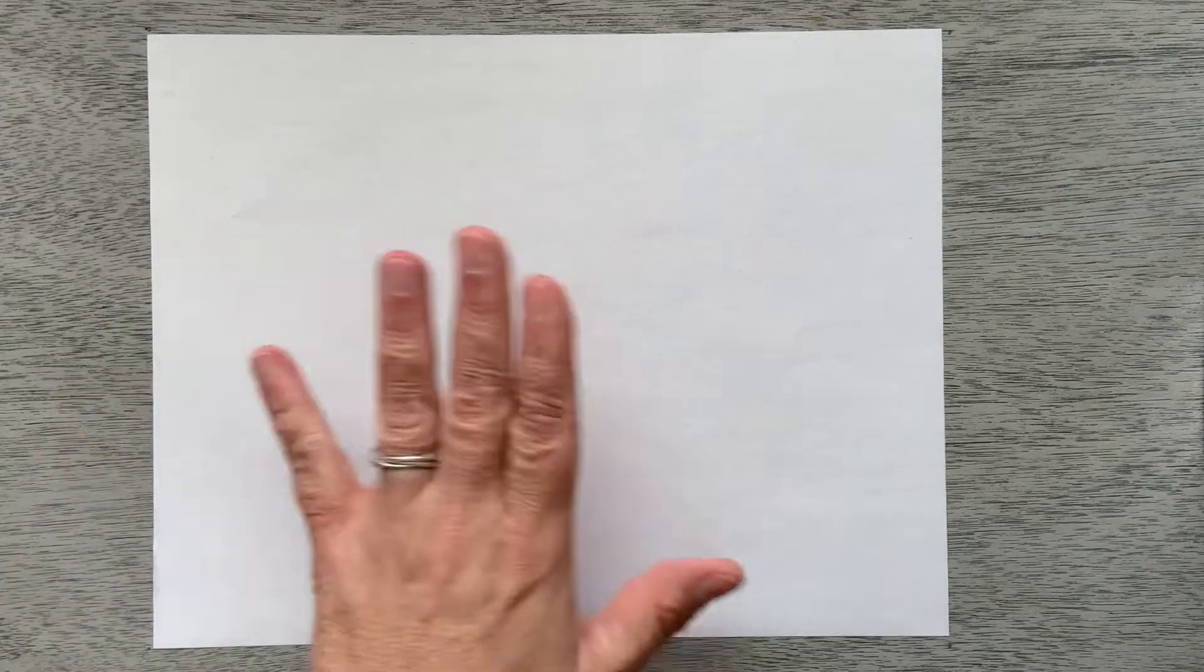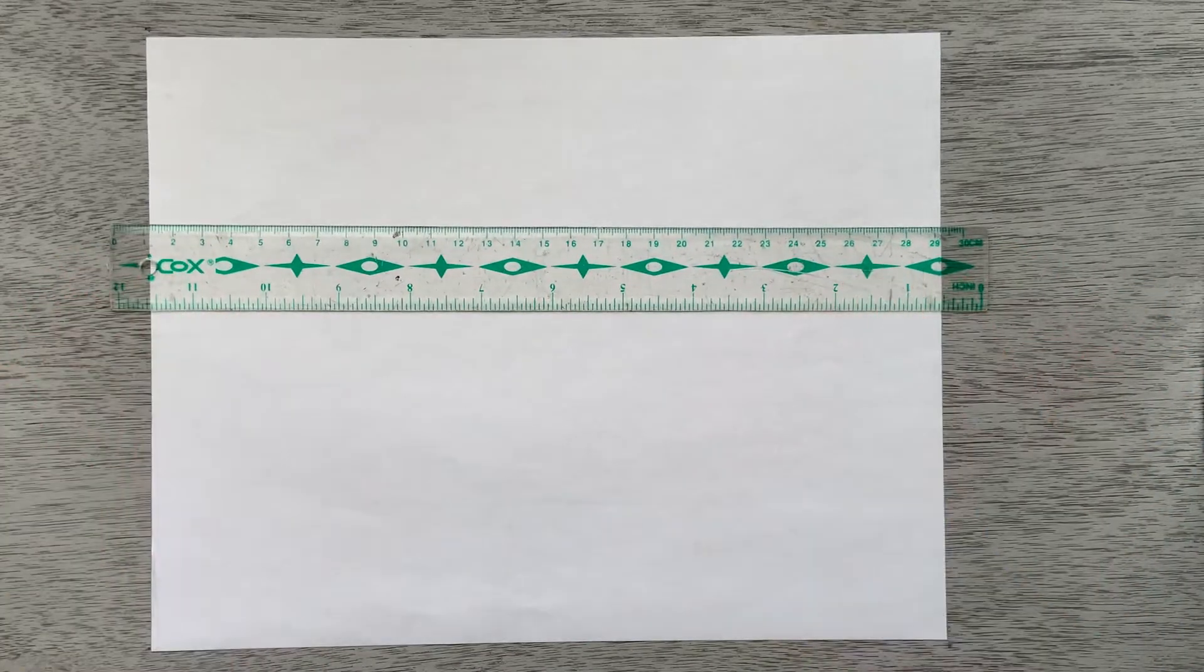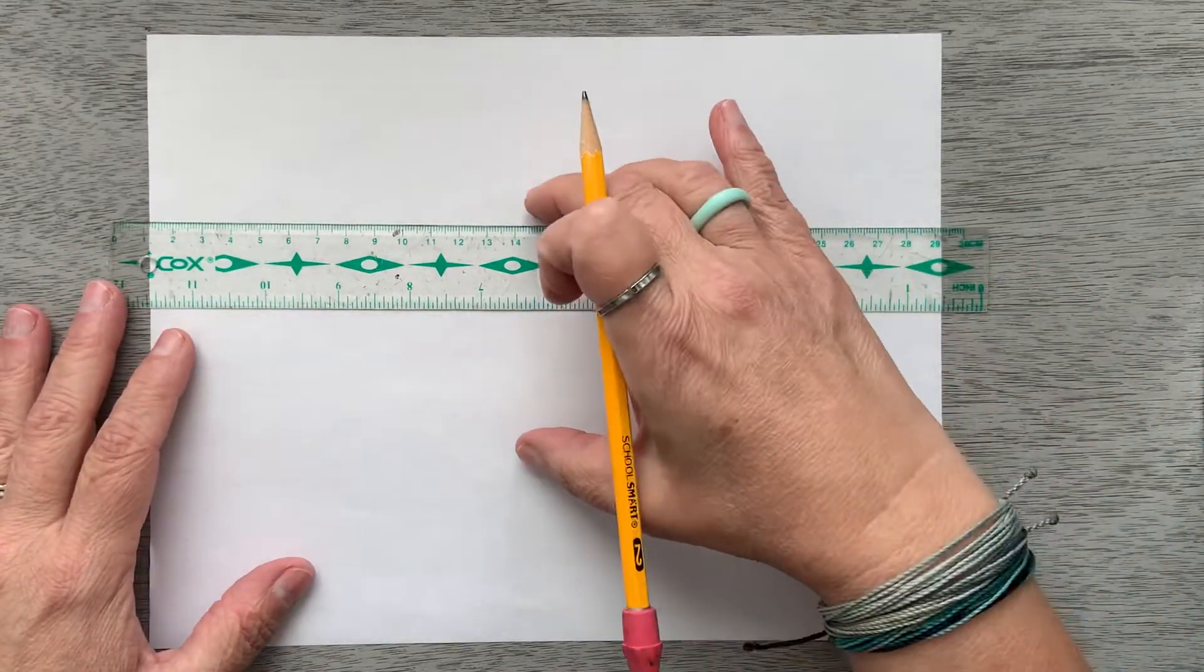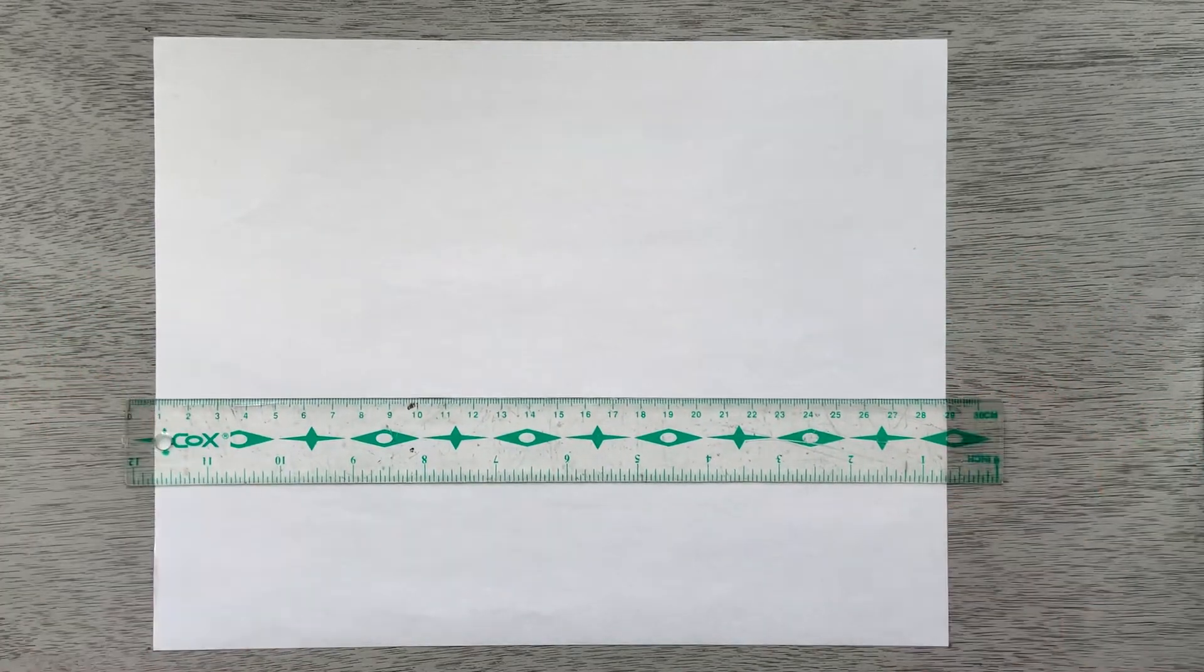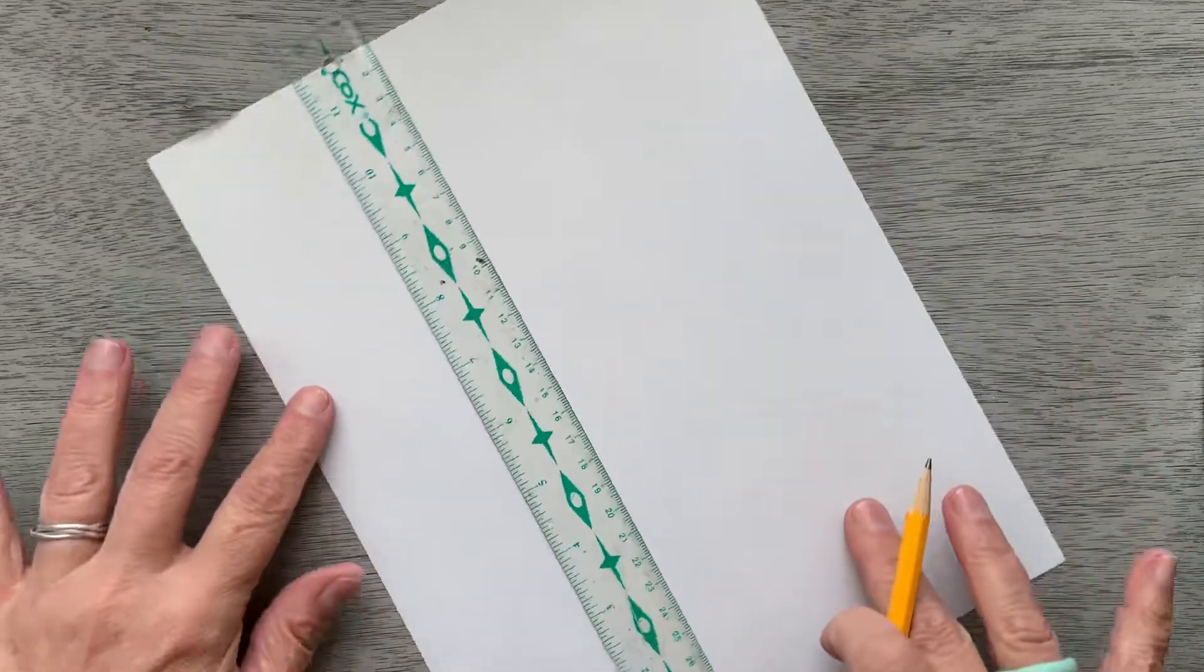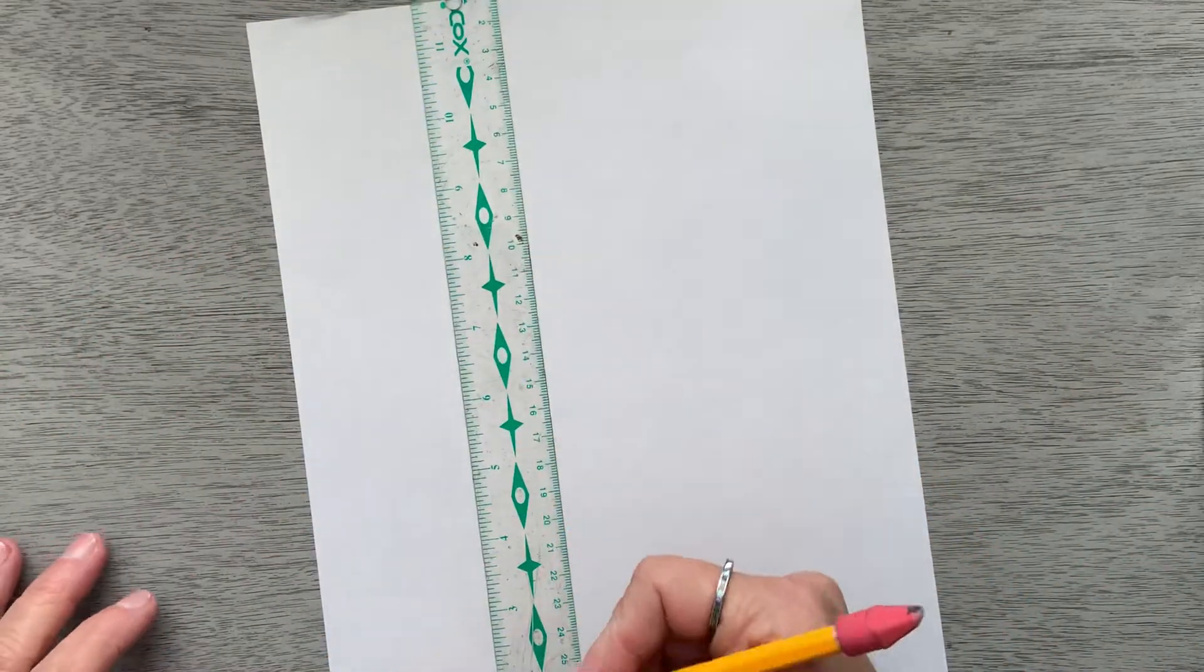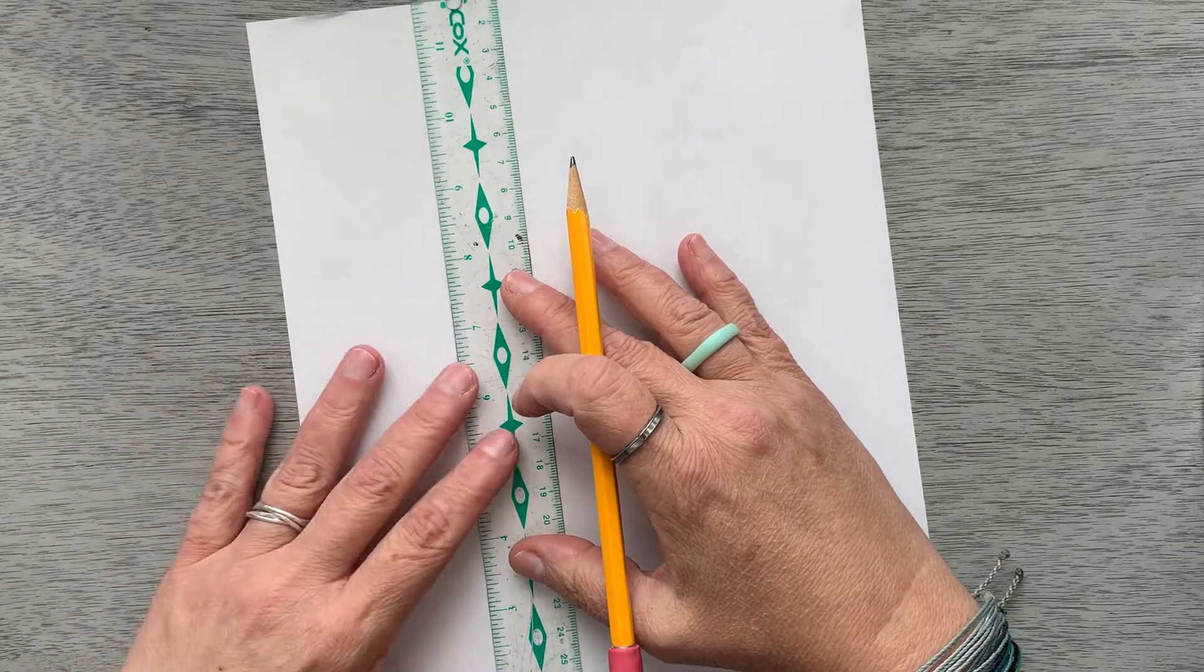In order to have our lettering look nice and even, I like to draw some guidelines first. As tall as I want my letters to be, if I want to be in the middle of the page, perhaps at the bottom of the page, I am going to take my ruler. I'm going to try to line it up so that it is as parallel with the top and bottom as I can get it.